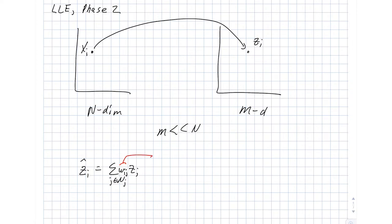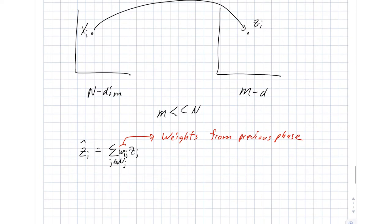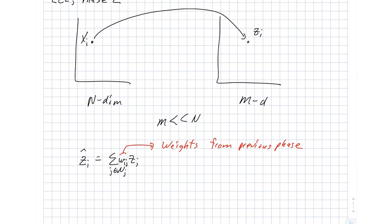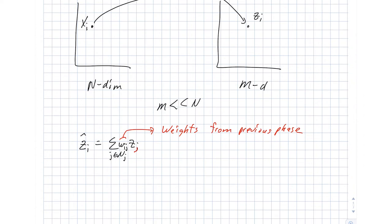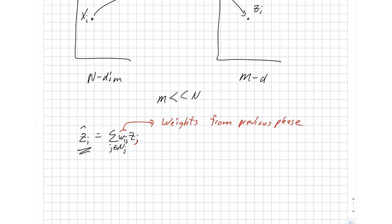So this WIJ, these are the weights from the previous step. And we're free to select all of the ZIs. This is ZJ, by the way. And now what our cost function is, it looks like this. So this is our estimated location for ZI. And we're going to compute a sum squared reconstruction error, just as we did in the previous phase.